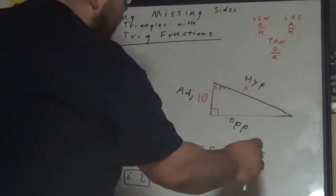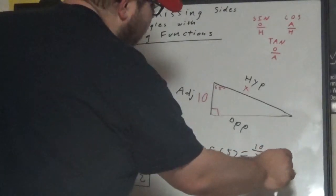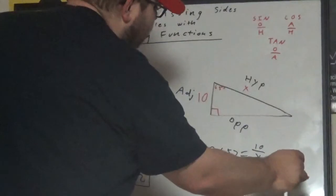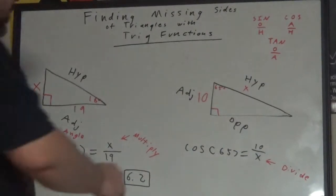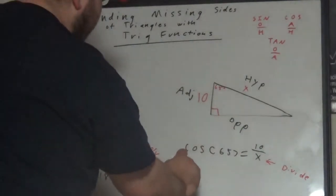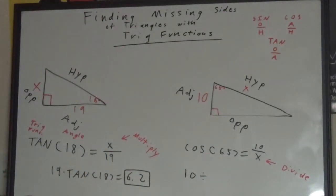When the x is on the bottom, we divide. If the x is on the bottom, we are going to divide. Now what we are going to do is take our 10 and divide by cosine 65.